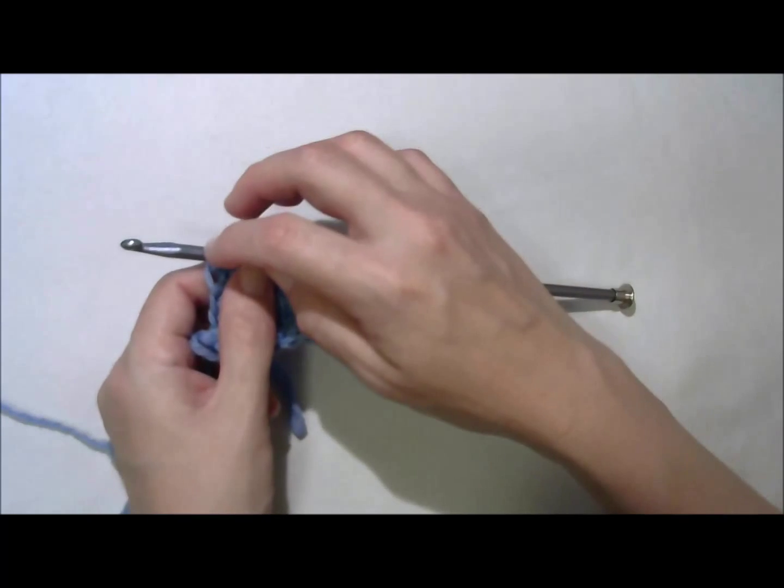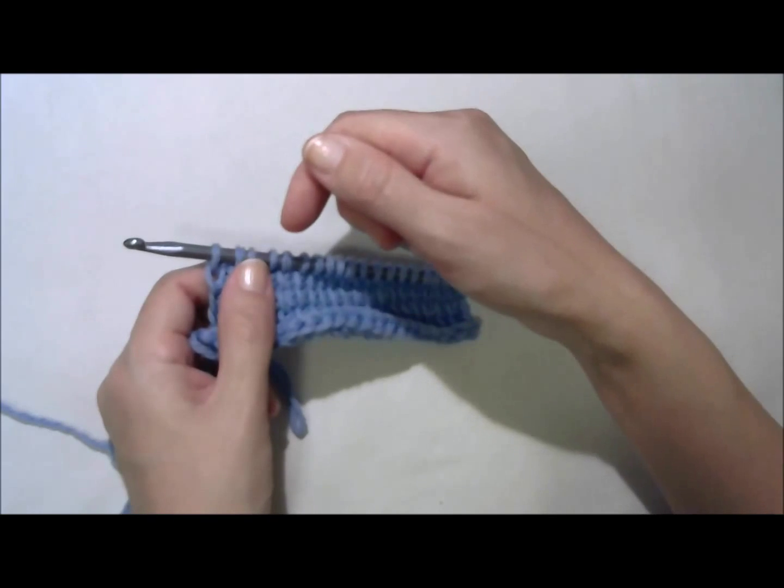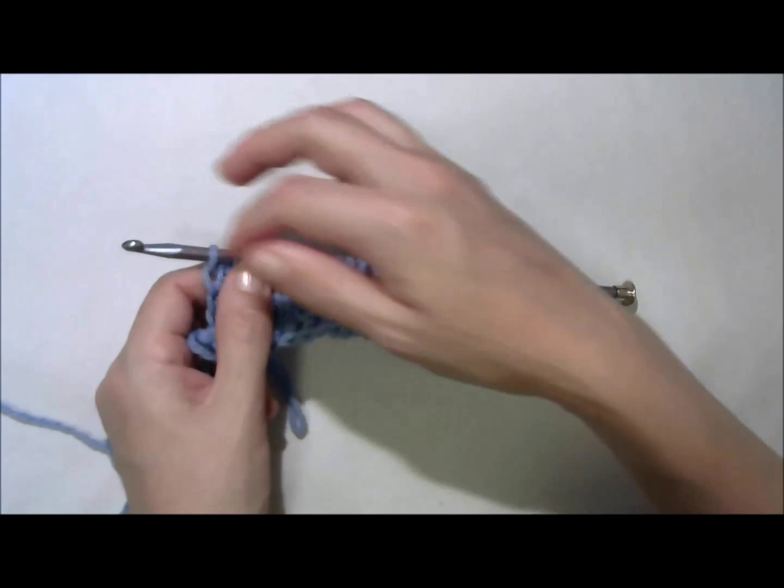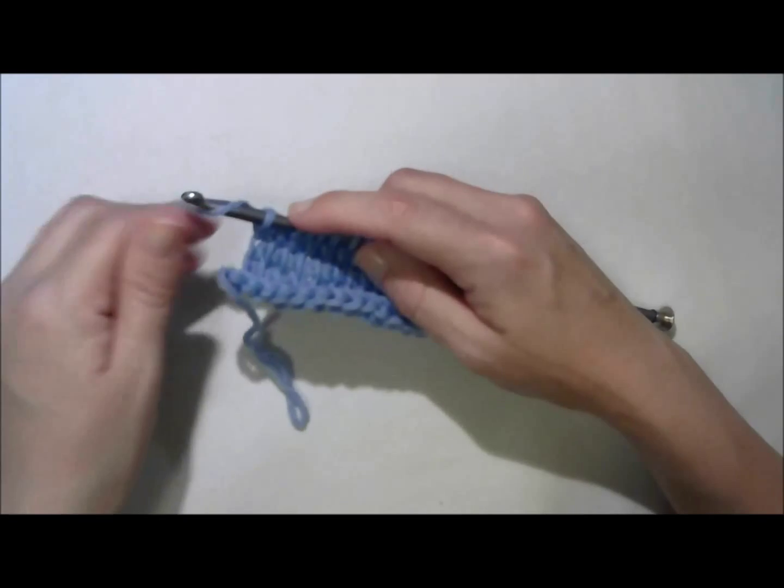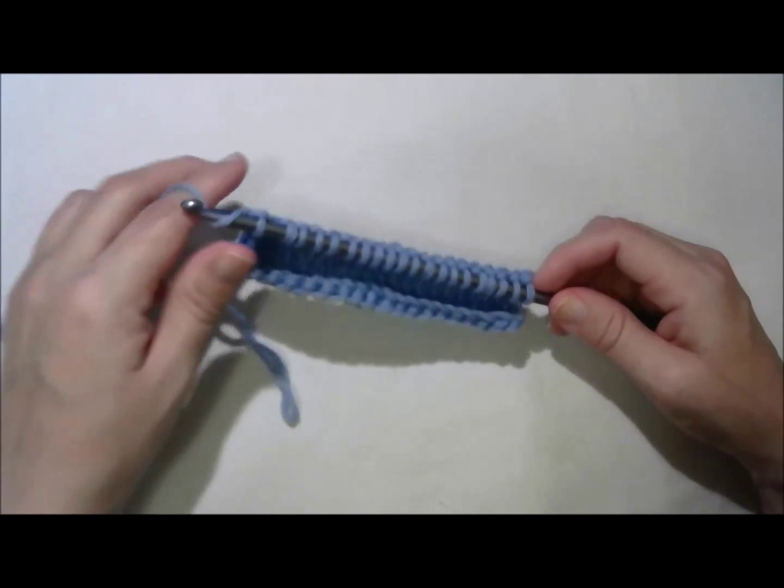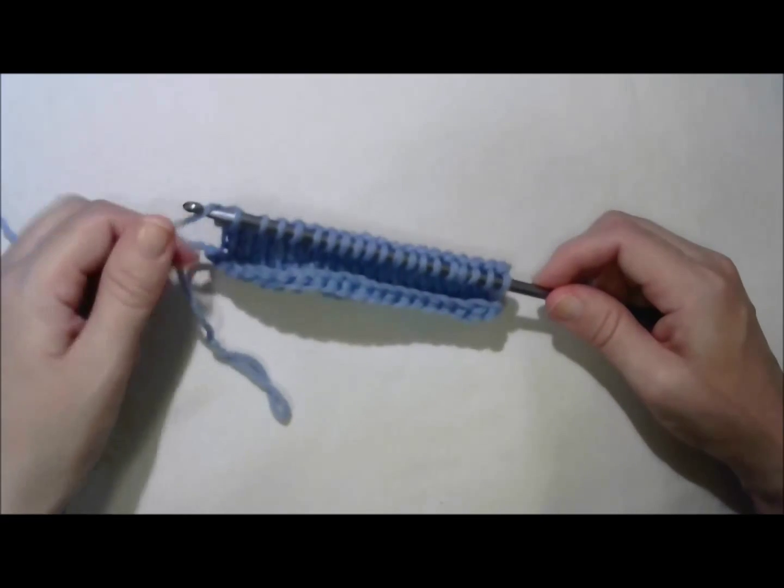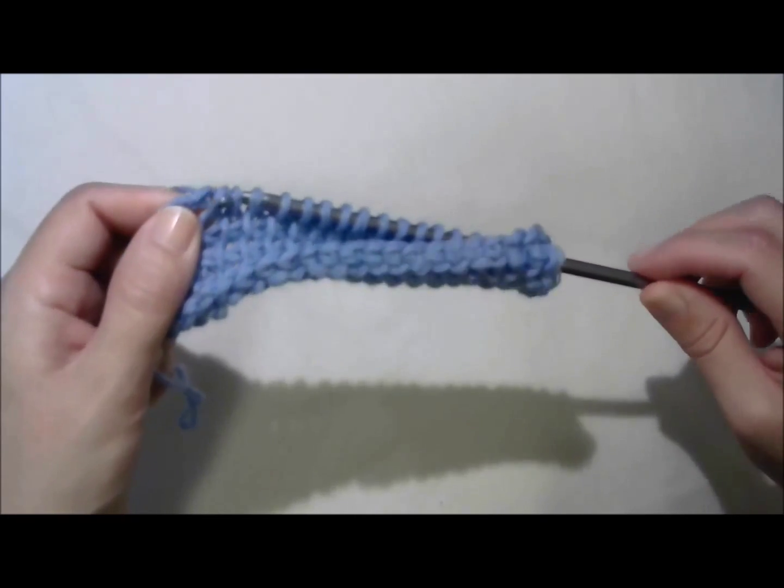I'm going to yarn over, draw through one to make the edge. And then, yarn over, draw through two. Yarn over, draw through two, repeat. Back to the beginning. Yarn over, draw through one, that's the edge. Yarn over, and draw through two, and draw through two.